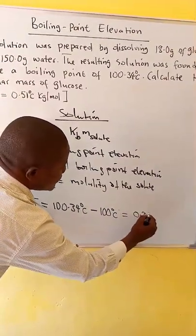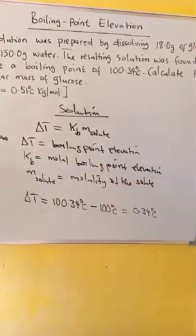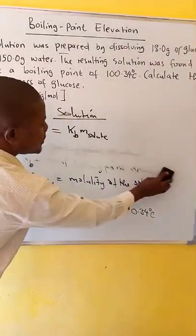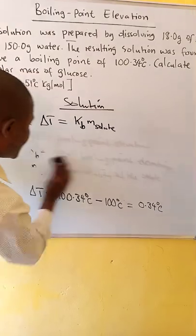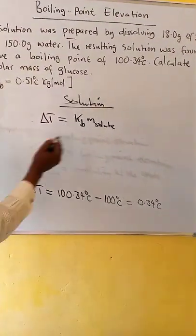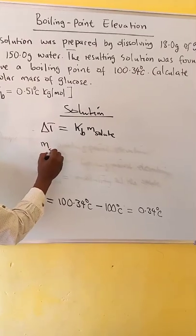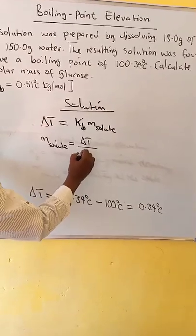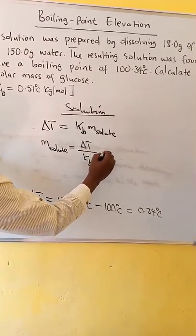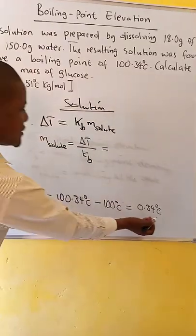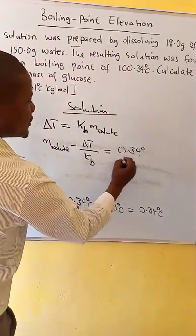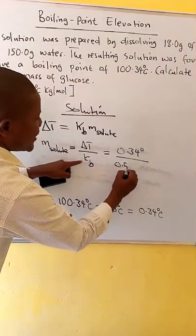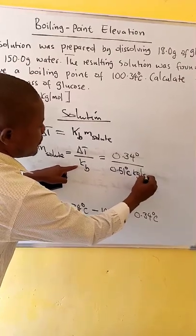So we use the delta T and Kb to calculate the molality. We make m the subject of the formula: m solute is equal to ΔT over Kb, which is equal to our delta T of 0.34 degrees over Kb for water, which is 0.51 degrees kg per mole.